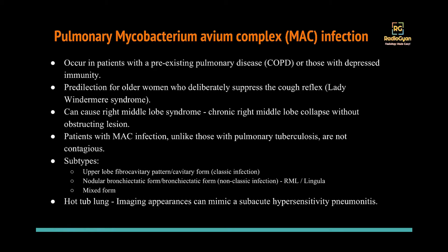That is why it is known as Lady Windermere syndrome — Lady Windermere was a character from one of the old plays. Typically it can cause right middle lobe syndrome, which is chronic right middle lobe collapse without any obstructive lesion. These patients are not contagious like those with Mycobacterium tuberculosis. The common subtype is the upper lobe fibrocavitary pattern, which can mimic tuberculosis; the less common form is the nodular bronchiectatic pattern, specifically described in the right middle lobe — Lady Windermere syndrome.